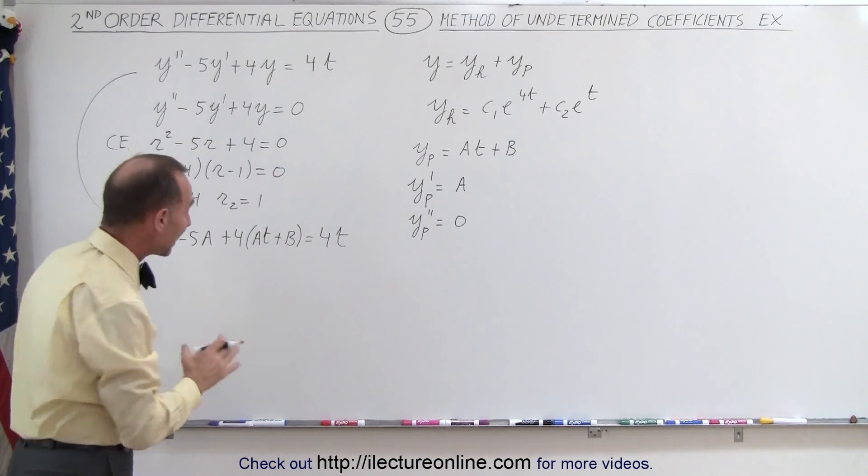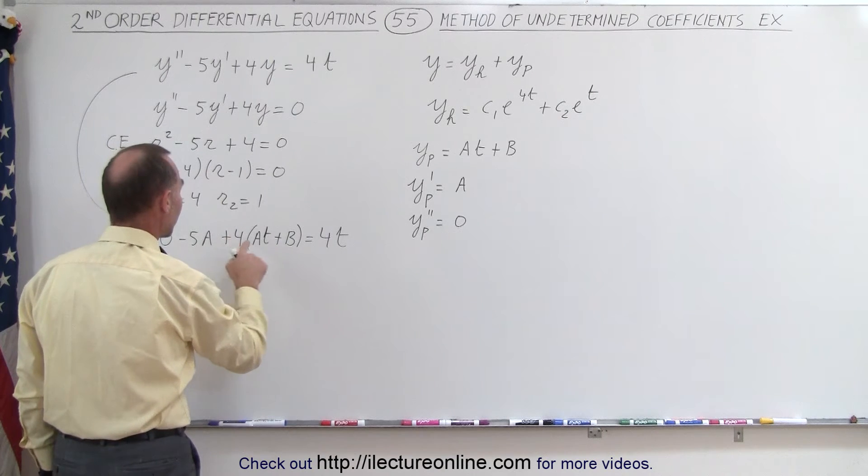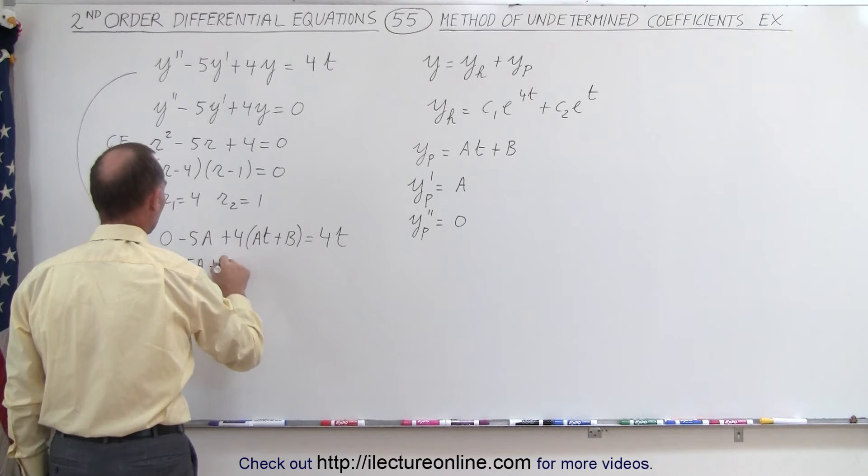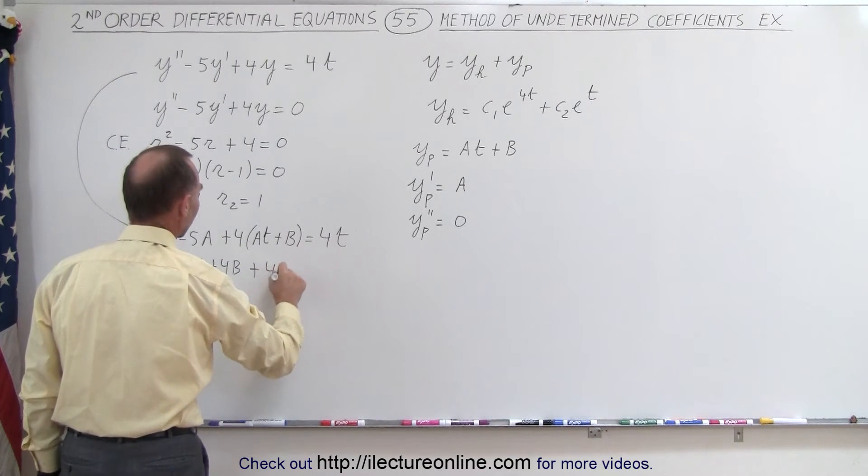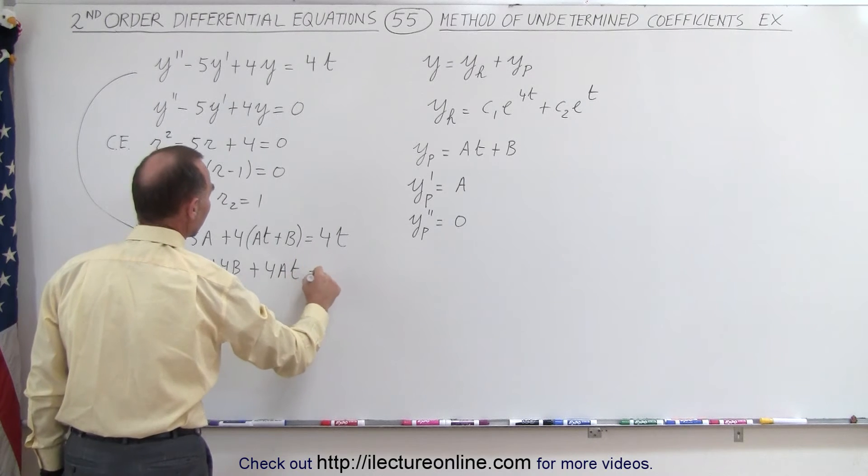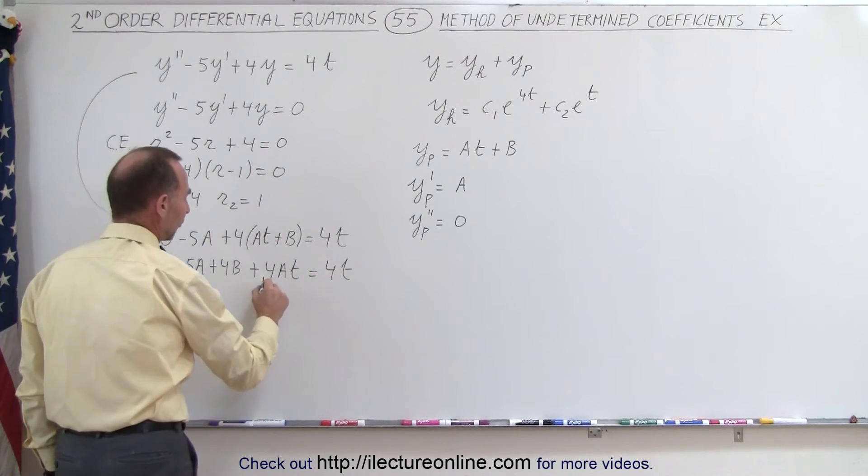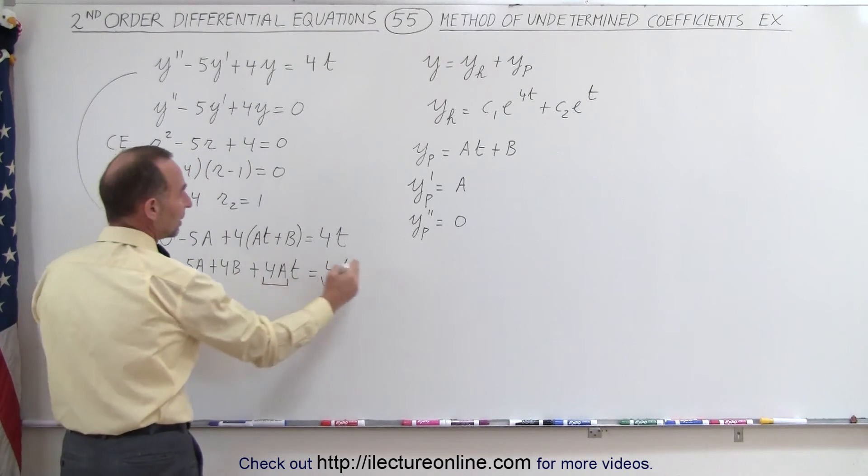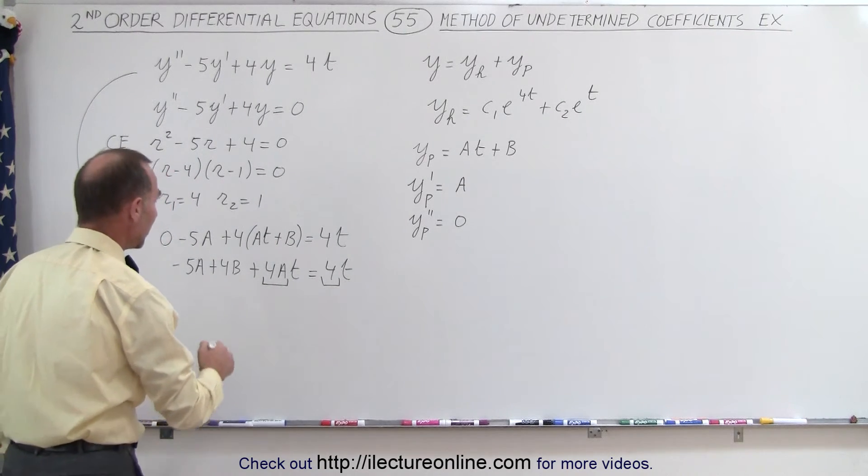Now we're going to combine terms on the left side. So we have -5A + 4B, and then we add that to +4At = 4t. So now we can tell that 4A needs to be equal to 4, and then -5A + 4B needs to be equal to zero. So those are the two equations that help us find A and B.